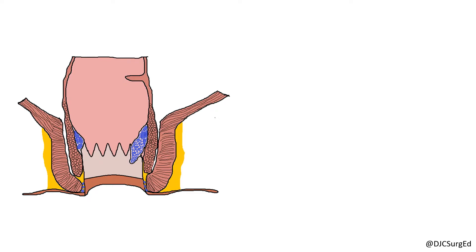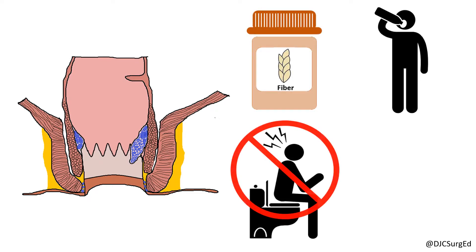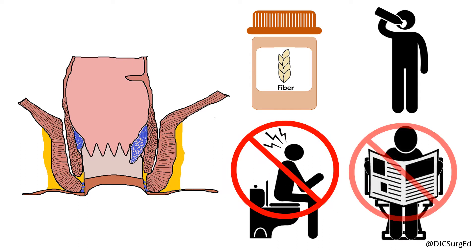Conservative treatment is first-line therapy and includes a fiber supplement, encouraged water intake, counseling to reduce straining, and avoidance of activities like reading while sitting on the toilet. For patients who fail conservative therapy, several types of procedures may be offered.